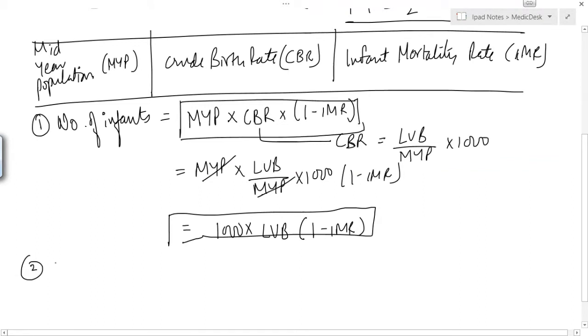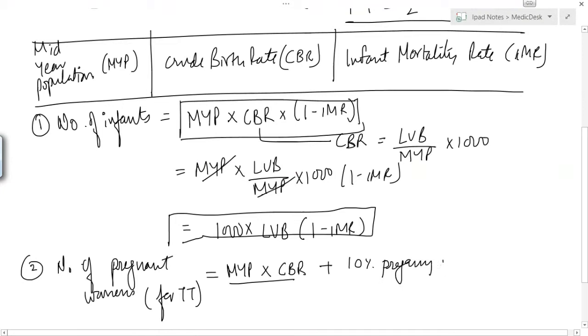So these two are the formulas that you can use in any given conditions. The second thing that we need for calculating the TT injections would be number of pregnant women, because TT injections are given to the pregnant women. For TT, that would be equal to mid-year population into crude birth rate, and after that we will need 10% pregnancy wastage to be added to this final result. And this 10% would be the product of this.